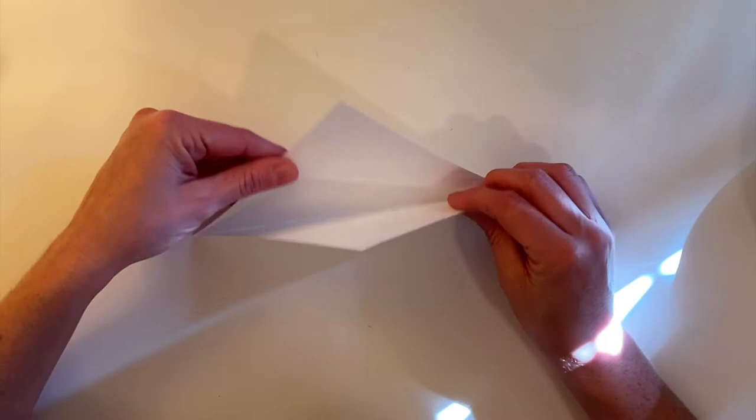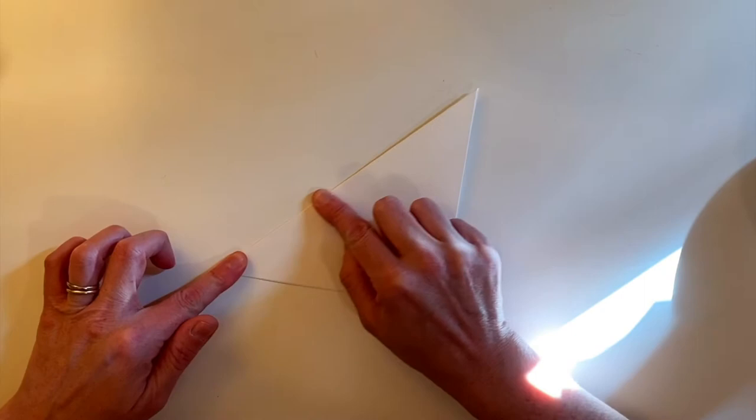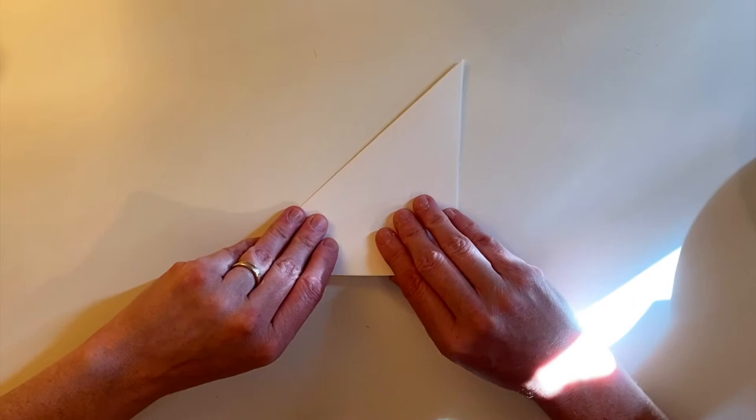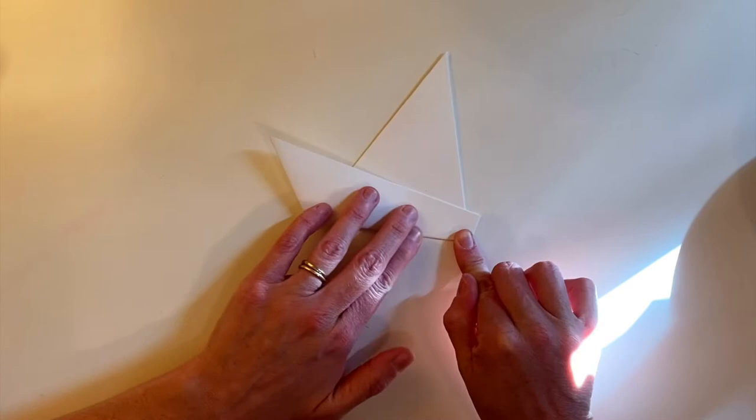Now we're going to make the hull of the boat. So turn the paper so that the crease is on the top. Next, take the bottom and fold it on a diagonal. You can see that the part on the left is larger than the part on the right. So now we've created the hull of our boat.